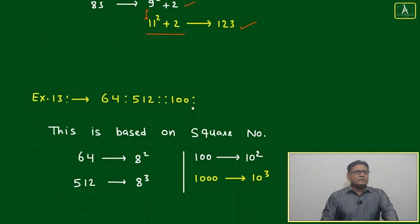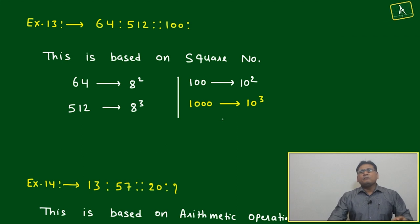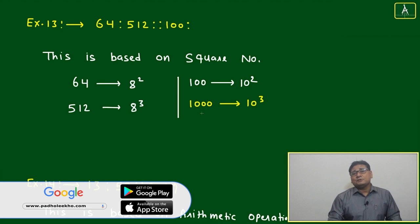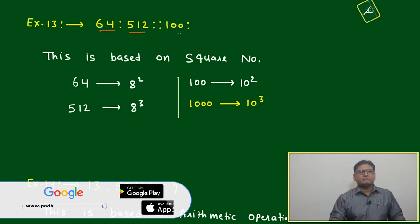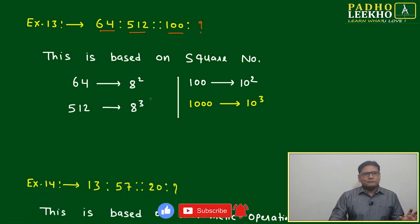We'll come to Example 13 to understand more variety of questions which can be asked based on analogy. 64, 512, 100... How do you - just by looking into it - we can say all are perfect square, perfect cube, or something in terms of the power of 2 or power of 10.